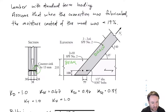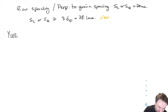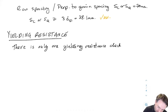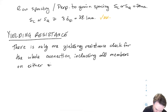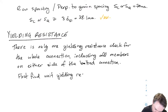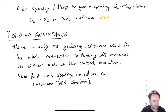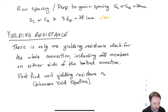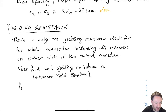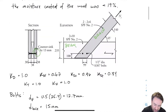I'm going to start with the yielding resistance check, which applies to the entire connection. There's only one yielding resistance check for the whole connection. First I'll find all the embedment strengths and the parameters that go into the Johansen yield equations, then plug them in to get the unit yielding resistance per bolt. I need to find F1 for the side plates — the two brace members — and F2 for the middle member, the beam.